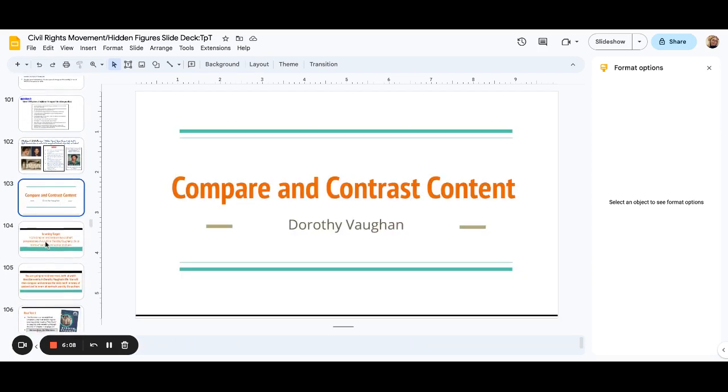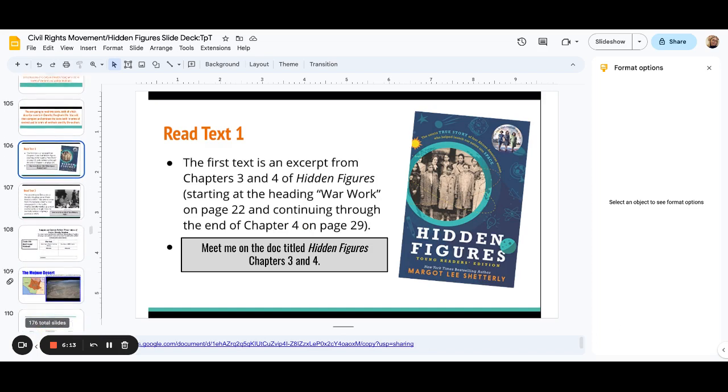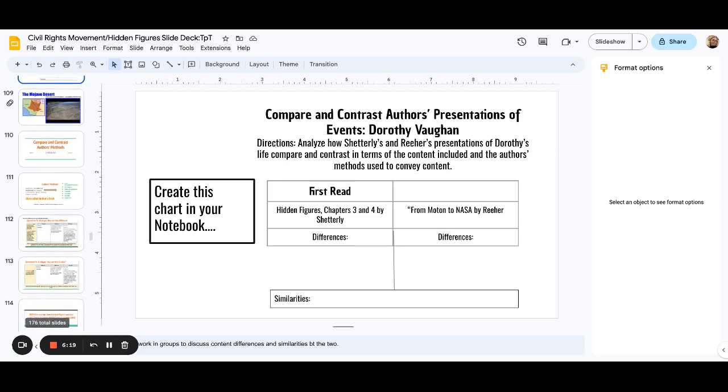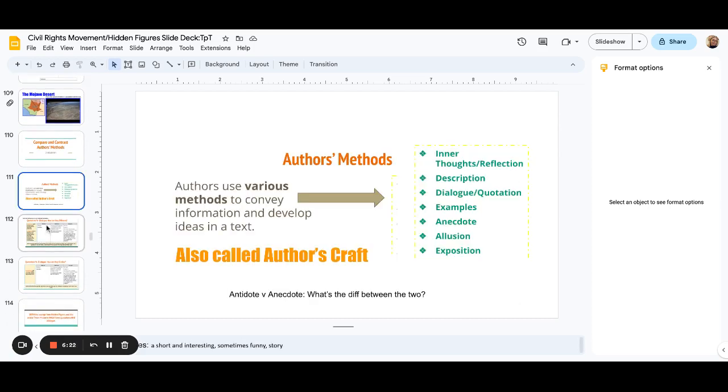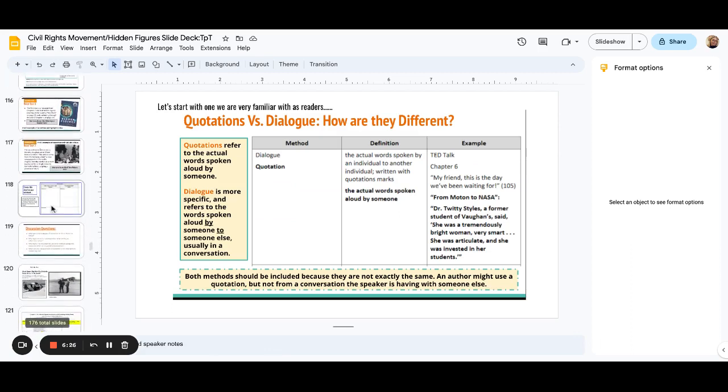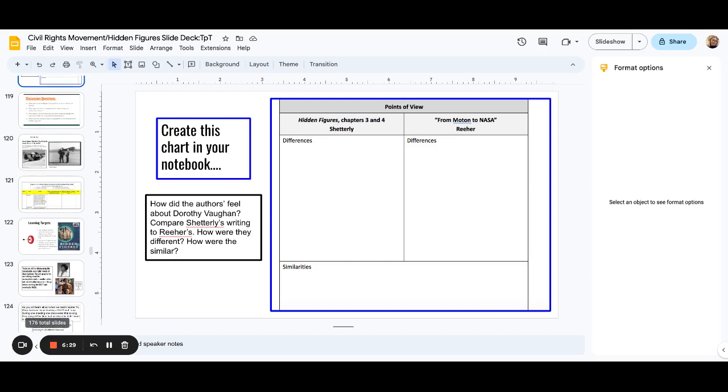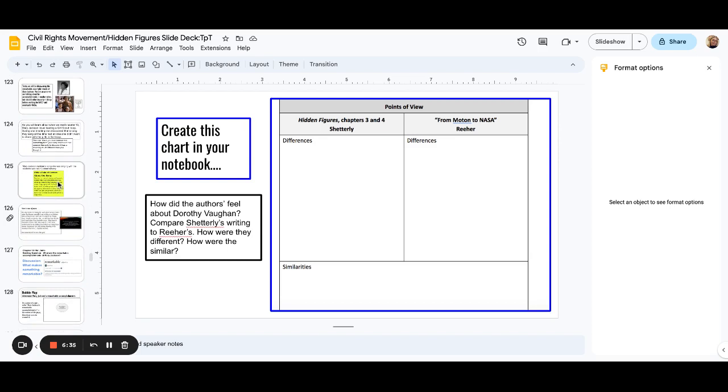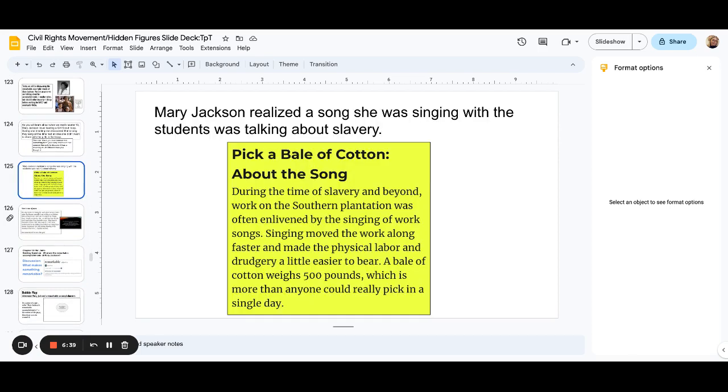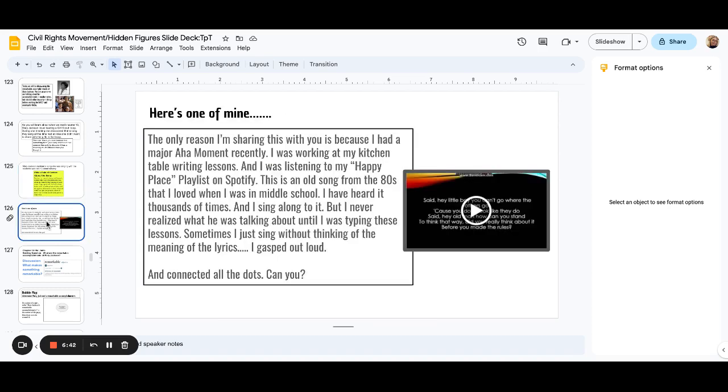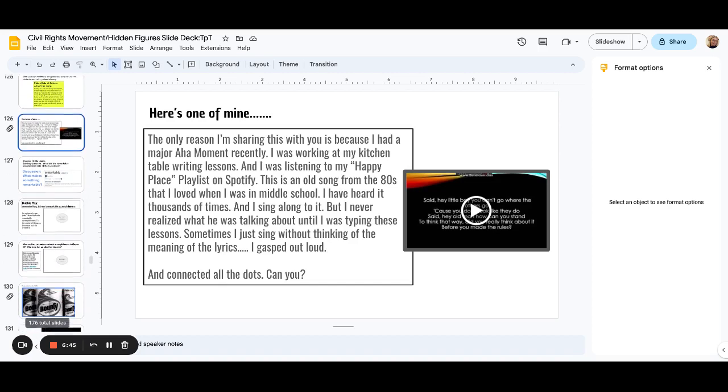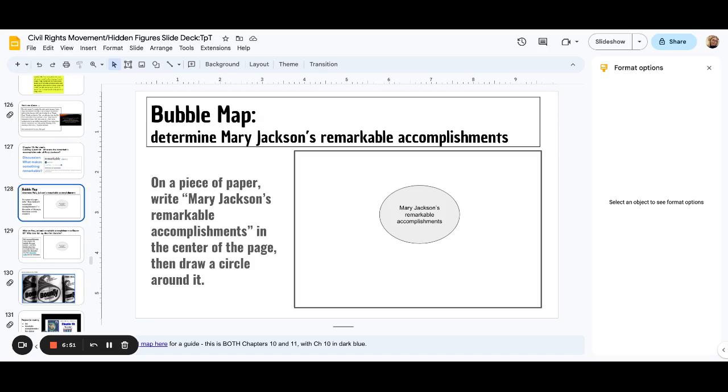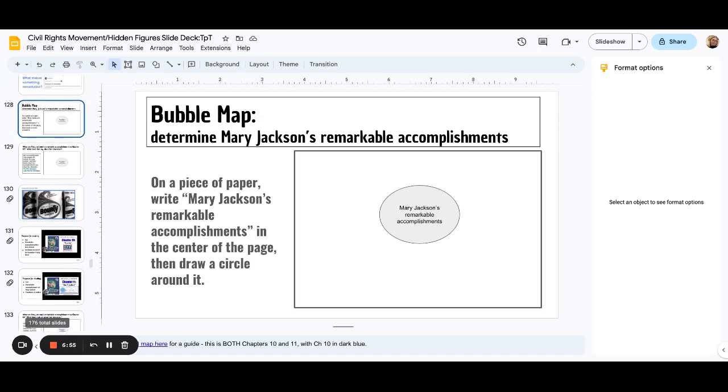A lesson on Dorothy Vaughn reading two different texts and then looking at how authors perceive Dorothy Vaughn and all her accomplishments. The students will do work with that. Then here's a quick mini lesson on authors' methods and how the author uses specific methods to convey their message. More vocabulary and context. More chapter reading. More clips with the movie. A mini lesson. Mary Jackson, the character from the book. It goes in depth about her connecting pop culture to what happens in the book. Here the kids will complete a bubble map on Mary Jackson's accomplishments. You'll look at all of the women's accomplishments.